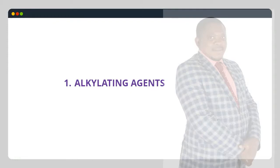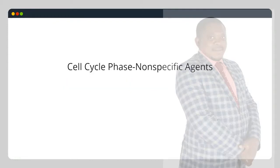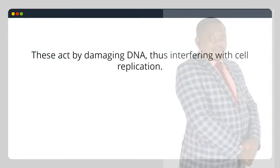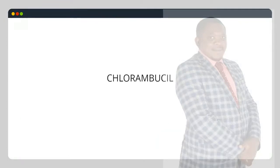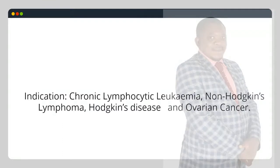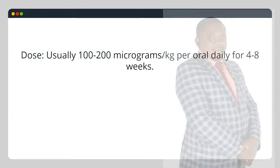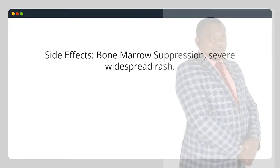1. Alkylating agents: cell cycle phase non-specific agents. These act by damaging DNA, thus interfering with cell replication. Chlorambucil — indication: chronic lymphocytic leukemia, non-Hodgkin's lymphoma, Hodgkin's disease and ovarian cancer. Dose: usually 100–200 micrograms/kg per oral daily for 4 to 8 weeks. Side effects: bone marrow suppression, severe widespread rash.